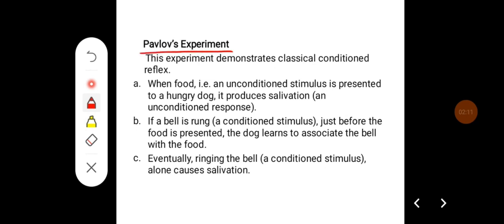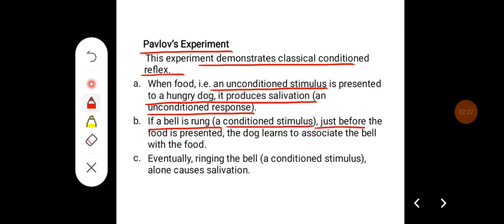Pavlov's experiment demonstrates the classical conditioned reflex. When food (an unconditioned stimulus) is presented to a hungry dog, it produces salivation (an unconditioned response). If a bell is rung (a conditioned stimulus) just before the food is presented, the dog learns to associate the bell with the food. Eventually, ringing the bell alone causes salivation.